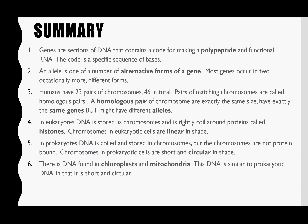That's it for our introduction to topic 4, DNA and chromosomes. As a recap: genes are sections of DNA which code for polypeptides and functional RNA. Alleles are alternative forms of a gene. Humans have 23 pairs of chromosomes — those pairs are called homologous, meaning two chromosomes with exactly the same genes. In eukaryotic cells, DNA is stored in chromosomes, tightly coiled around histone proteins, and is linear in shape. Prokaryotic DNA is also stored as chromosomes, but not associated with proteins — no histones — it's much shorter and circular. Lastly, DNA found inside chloroplasts and mitochondria is also short and circular, very similar to prokaryotic DNA.